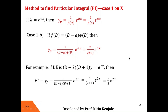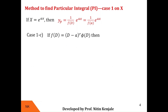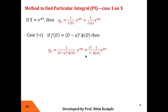Now it may happen that f(D) contains (D - a) several times in its factorization. In case 1c, where f(D) has the factor (D - a) appearing r times, the particular integral yp can be obtained by eliminating (D - a)^r and replacing it by x^r / r!. Then finally replacing every D in φ(D) by a, we get yp as x^r / r! times 1/φ(a) times e^(ax).